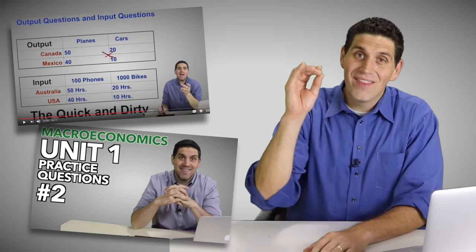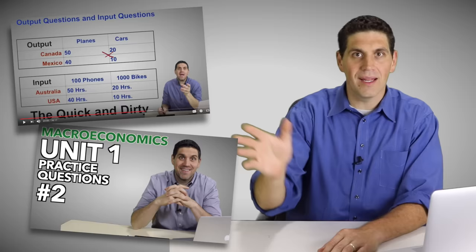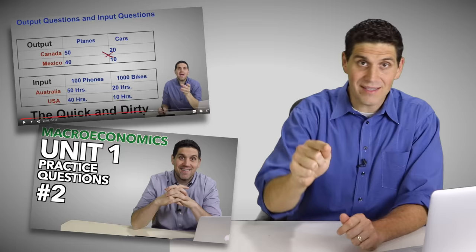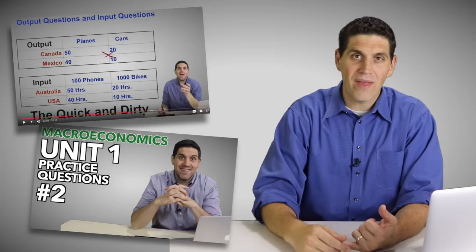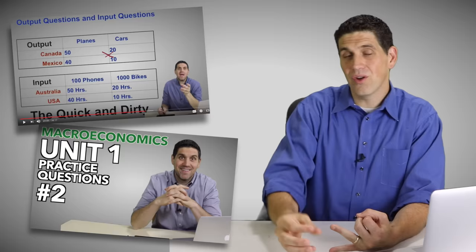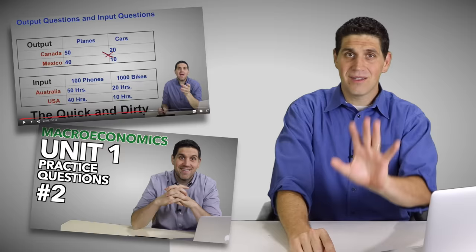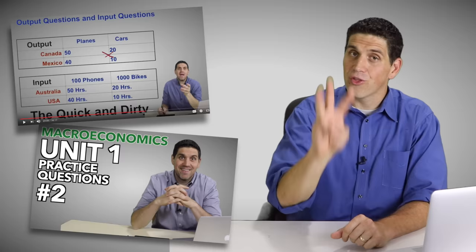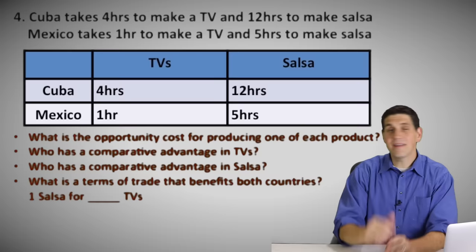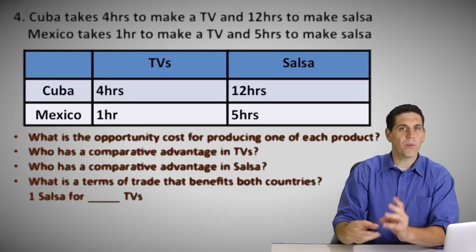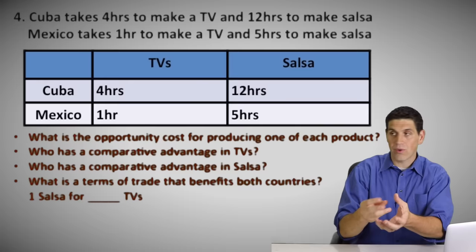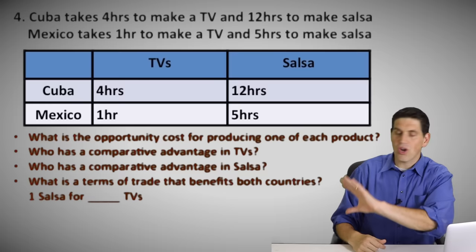This is an Achilles heel for a lot of students — a lot get tripped up on comparative advantage. Don't freak out, but don't tell yourself 'I'll get it later' because you need to get it now. To practice output questions, go to the links below. I gave you a link to a video where I go over multiple choice questions. Also take a look at my summary video for unit one — I do something called the quick and dirty, which gives you a trick to help you remember. We still have one more question to do. We've already done three output questions, and we've got one input question.